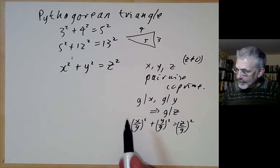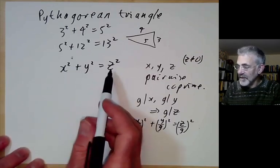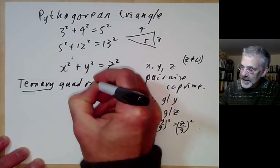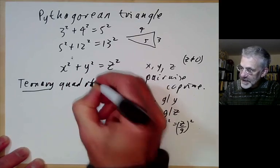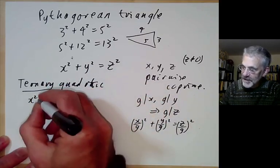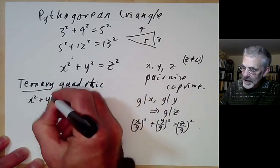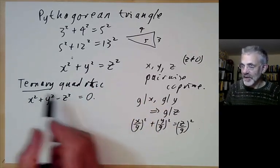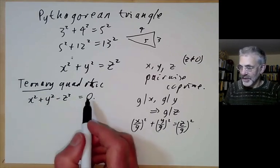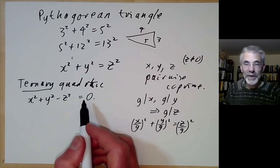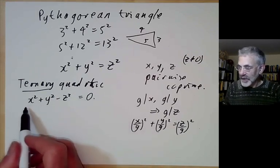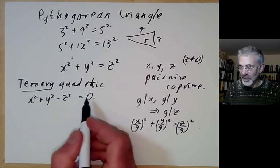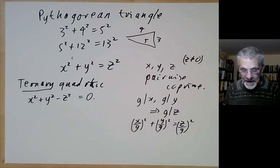This is actually a special case of something called a ternary quadratic form — ternary meaning it has three variables. We're really looking at the ternary quadratic form x squared plus y squared minus z squared, and we're looking at representations of zero by this form. There's an entire theory of ternary quadratic forms, which is like the theory of binary quadratic forms, only quite a bit more complicated. We're looking at what is more or less the simplest possible non-trivial case.